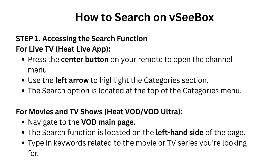For Movies and TV Shows — Heat VOD or VOD Ultra — navigate to the VOD main page. The search function is located on the left-hand side of the page. Type in keywords related to the movie or TV series you're looking for.